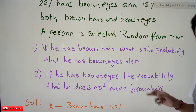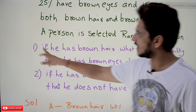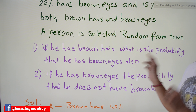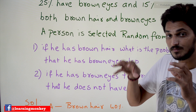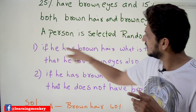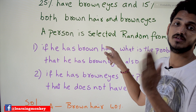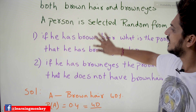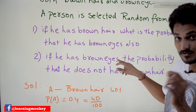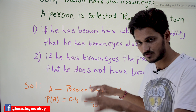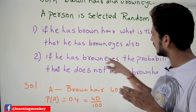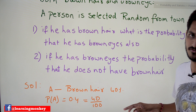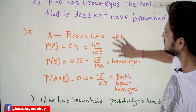A person is selected at random from the town. The first question asks: if he has brown hair, what is the probability that he also has brown eyes? A condition is given, so we are going to apply conditional probability here. Similarly, the second question asks: if the person has brown eyes, what is the probability that he does not have brown hair?